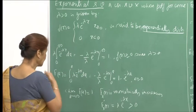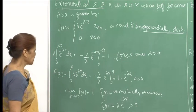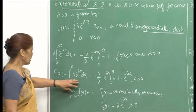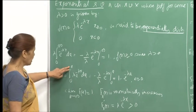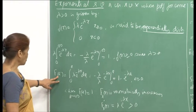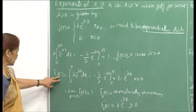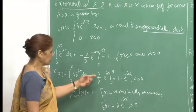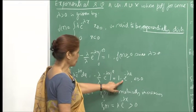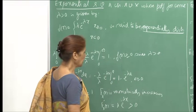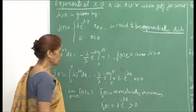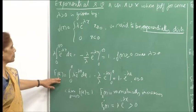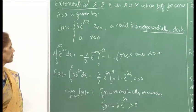We compute the distribution function: probability x less than or equal to a equals integral from 0 to a, which comes out to 1 minus e raised to minus lambda a, for a greater than or equal to 0, because our variable itself is non-negative.